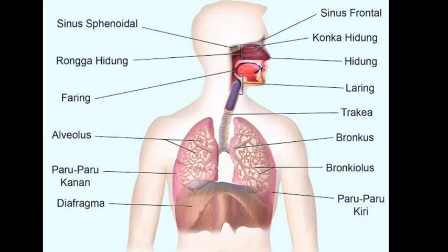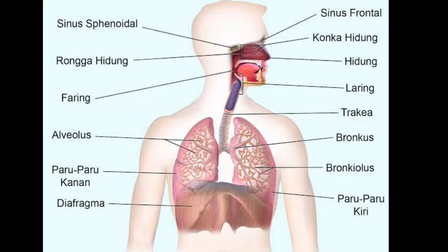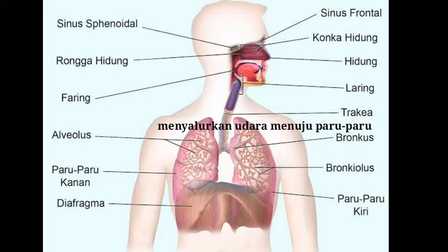Berikutnya yaitu hidung, berfungsi sebagai tempat masuk dan keluarnya udara. Berikutnya ada laring, berfungsi melindungi saluran pernafasan dari benda asing yang masuk ke organ pernafasan pada manusia. Selanjutnya yaitu trachea, berfungsi sebagai alat untuk menyalurkan udara menuju paru-paru pada tubuh manusia.